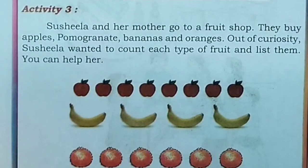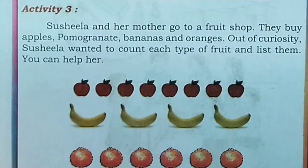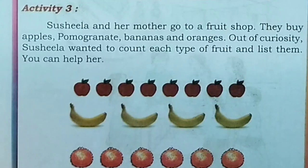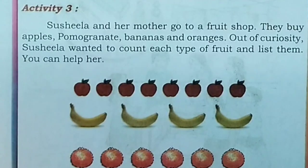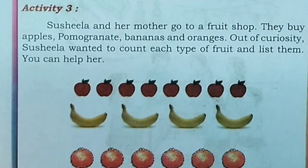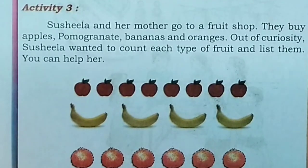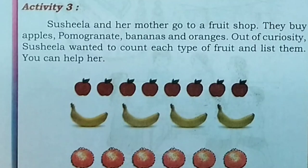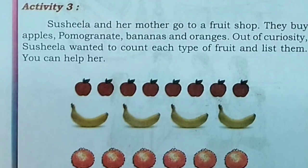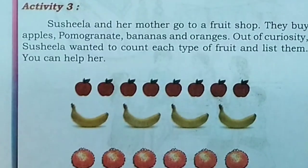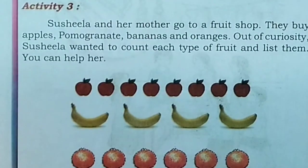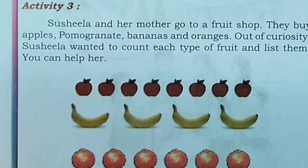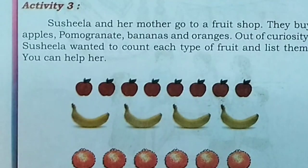Susila and her mother go to a fruit shop. They buy apples, pomegranate, bananas and oranges. Out of curiosity, Susila wanted to count each type of fruit and list them.